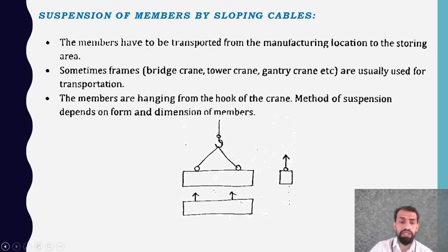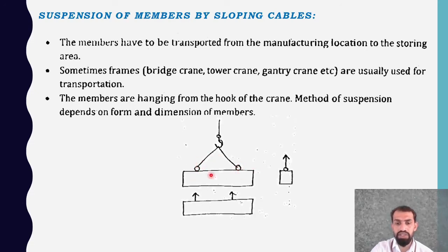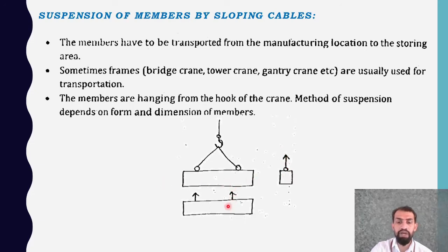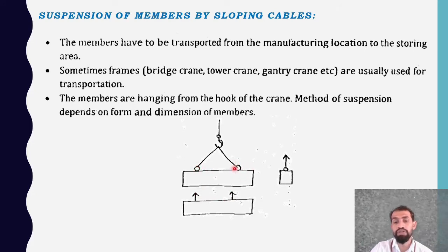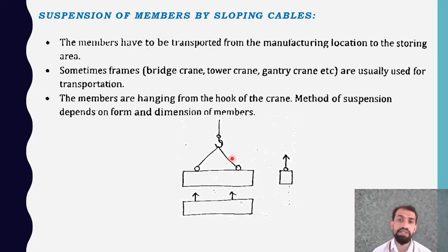Looking at the cable connections: there are two supports with a beam between them, viewed from both longitudinal and cross-sectional perspectives. From the cross-sectional view, only one reaction acts in the upward direction. From the longitudinal section, two reactions are present. The rotational moments at this point must equal zero — otherwise tilting of the member will occur. This type of joint is referred to as the sloping cable suspension joint.